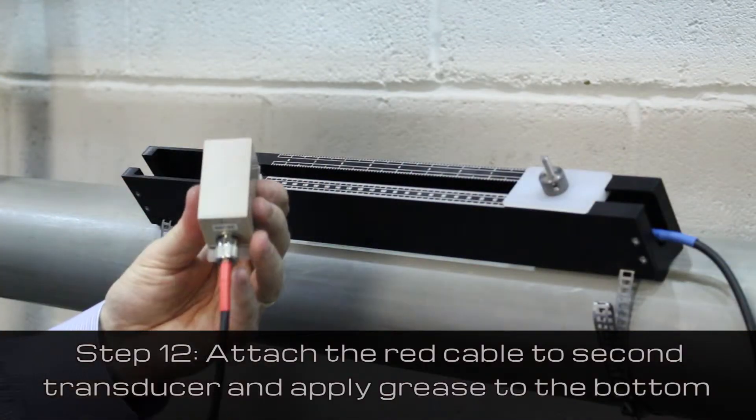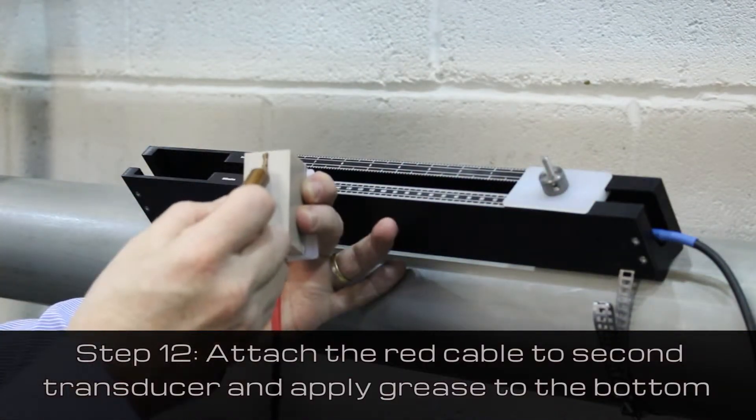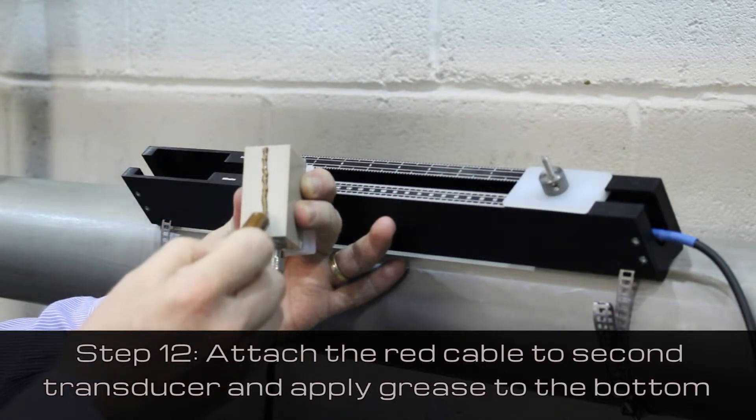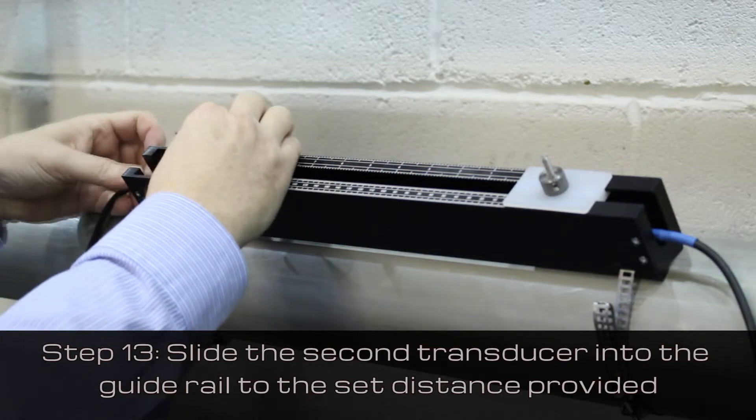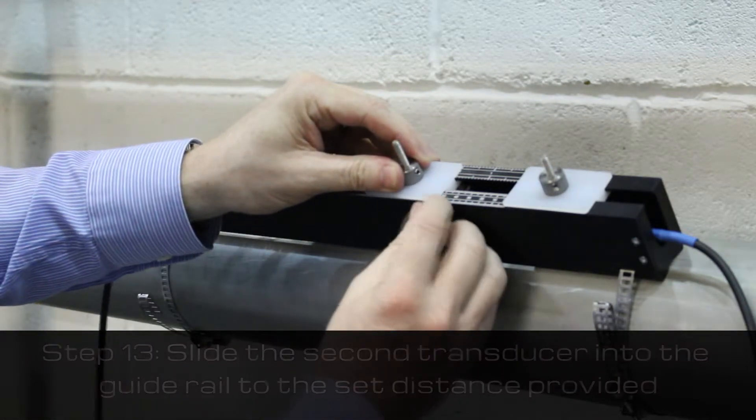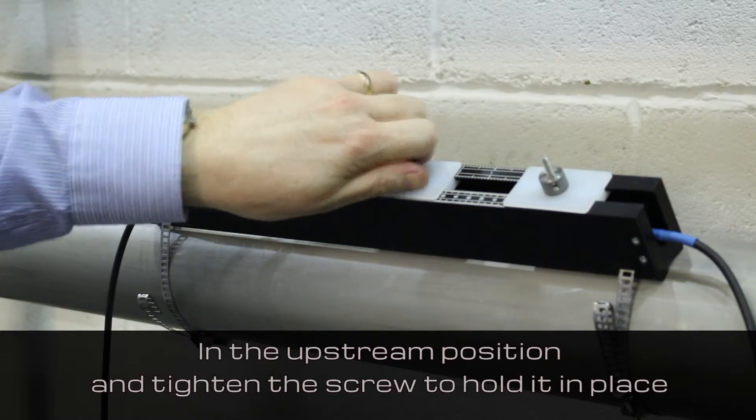Attach the red cable to the second transducer. Apply the grease and slide the transducer into the guide rail to the set distance provided by the flow meter in the upstream position and tighten the screw.